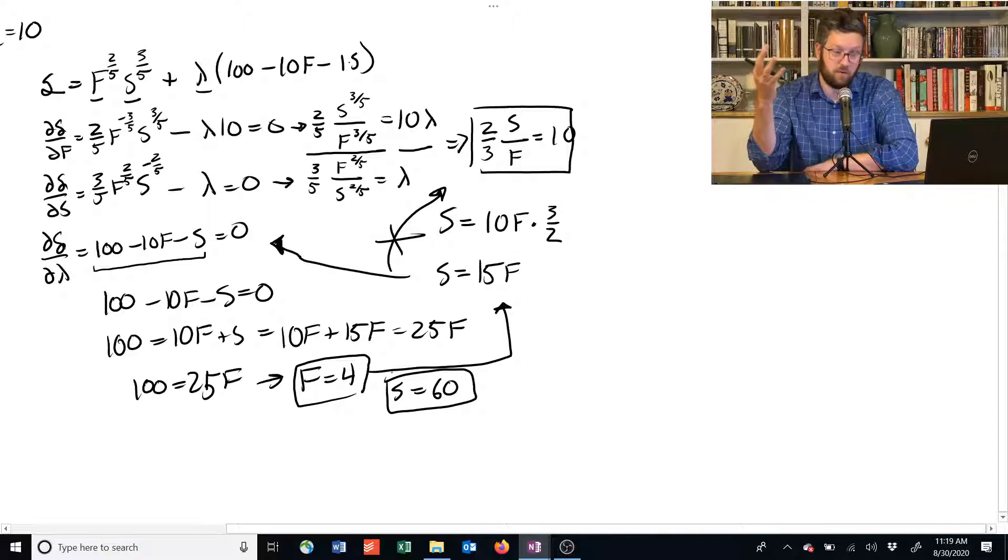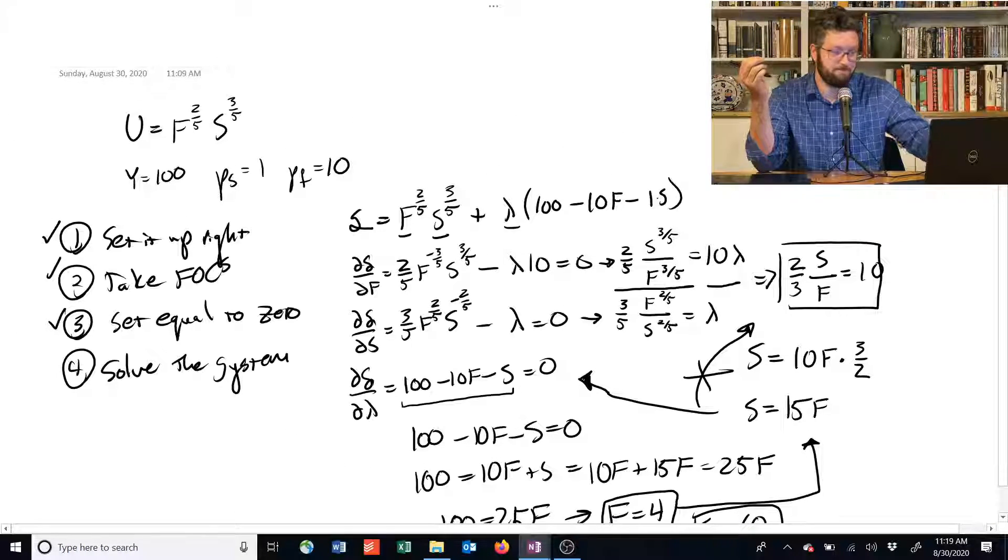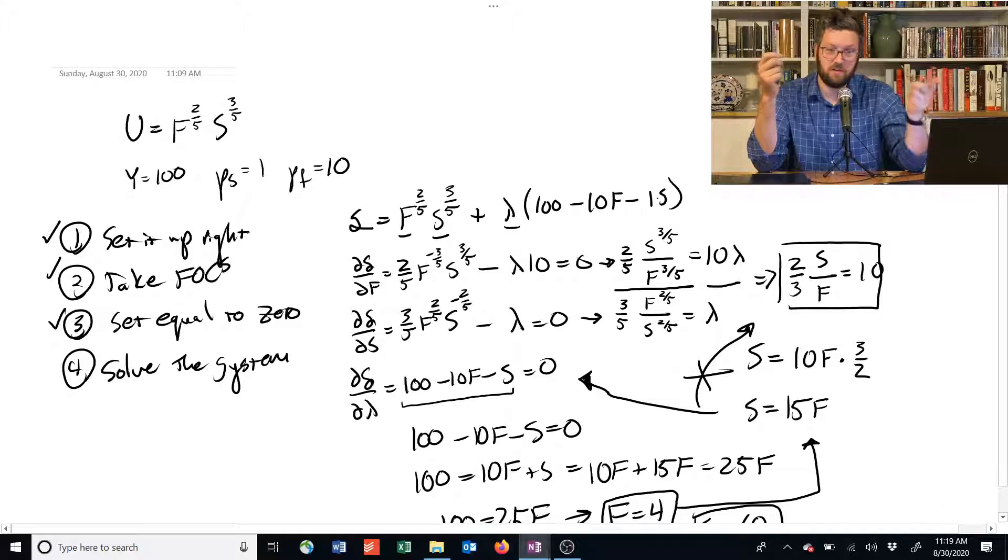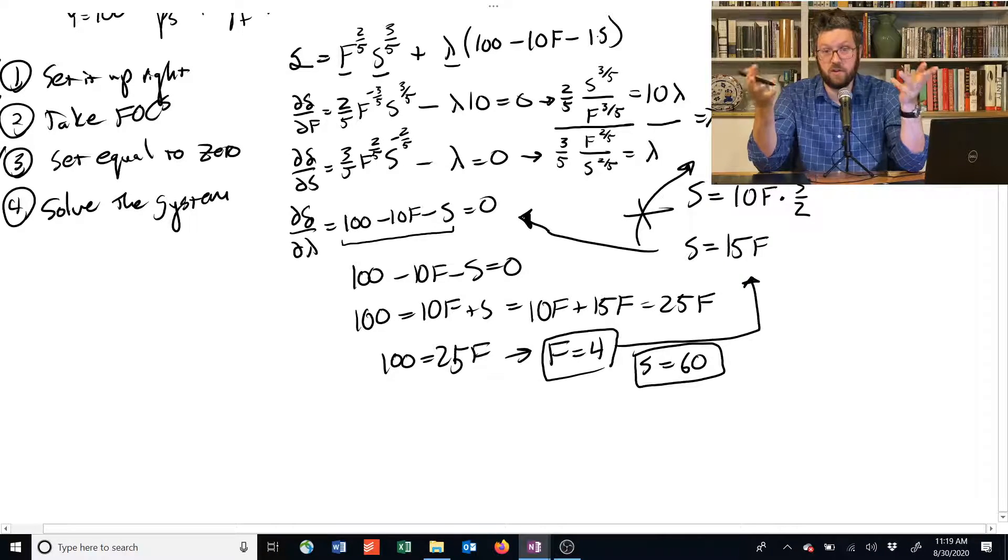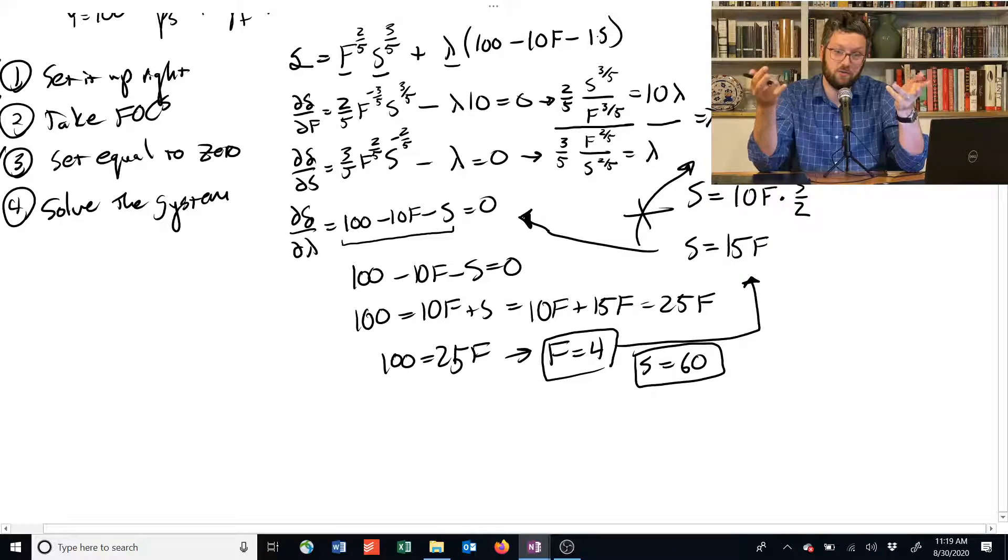And that's how we've used the Lagrangian method to go from a utility function, prices, and income, to the amount of food and shelter that this person is ultimately going to choose to purchase. Thank you, everybody.